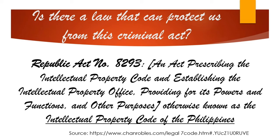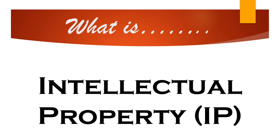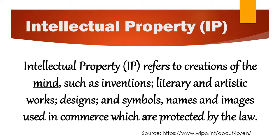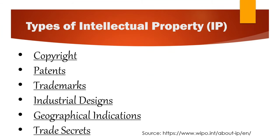By the way, what is intellectual property or IP? Let's read: 'Intellectual property or IP refers to the creations of the mind, such as inventions, literary and artistic works, designs and symbols, names and images used in commerce, which are protected by the law.' Source: www.wipo.int. Did you know that there are different types of intellectual property? We have six: copyright, patents, trademarks, industrial designs, geographical indications, and trade secrets.